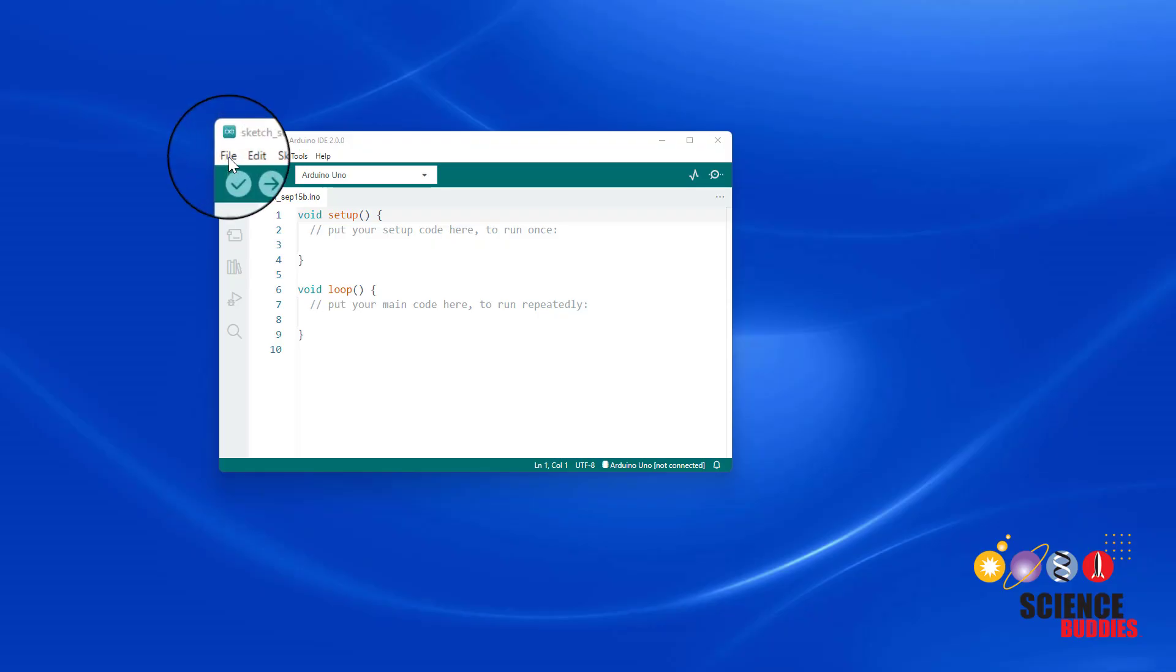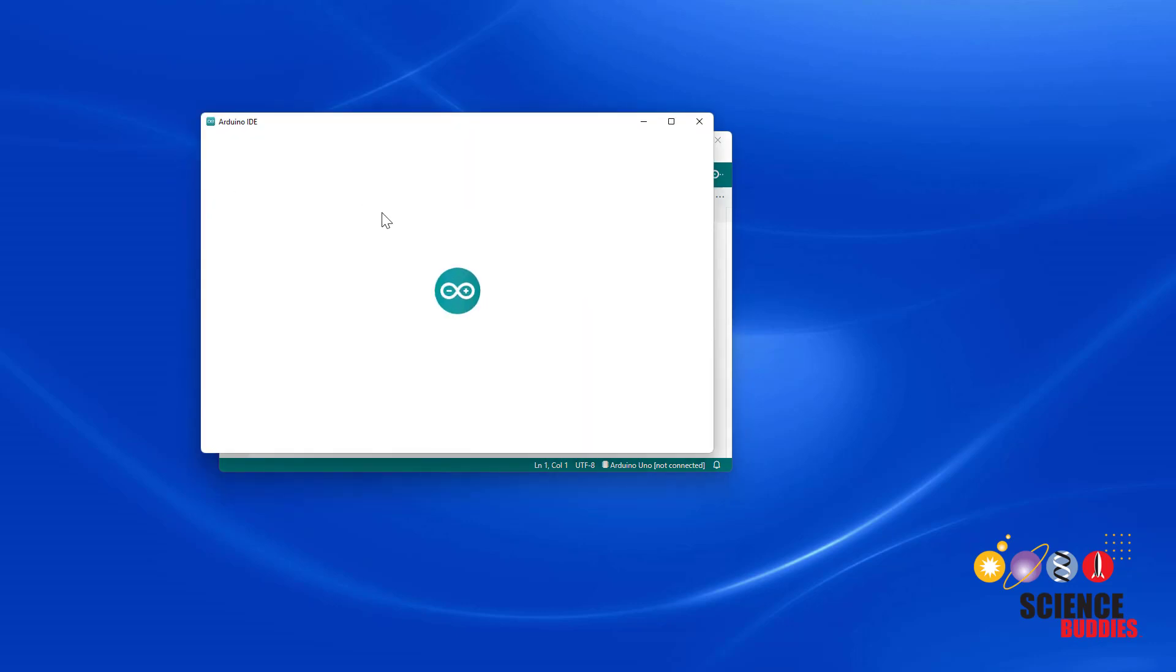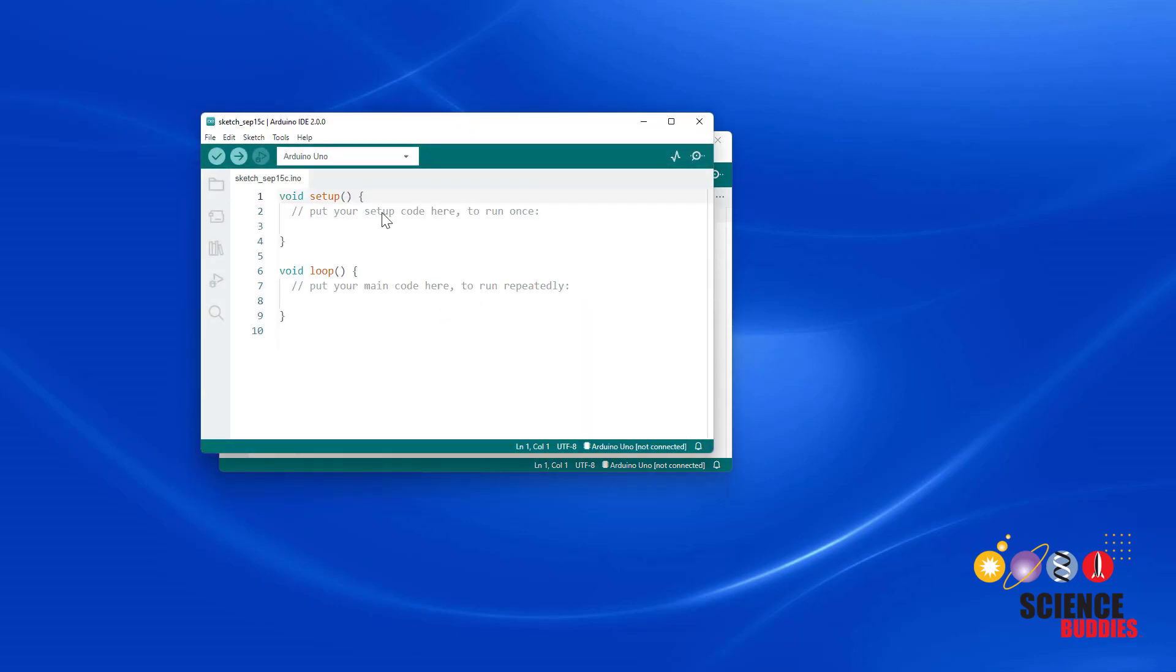Then open the Arduino IDE and get ready to write your first new program. To create a new program in the Arduino IDE, select File New. This will open a new window with a skeleton that includes the setup and loop functions, but they're both blank so you can add your own code.